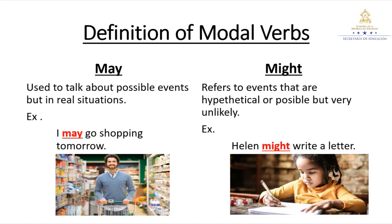Continuing with the definition of modal verbs, I have 'may.' May is used to talk about possible events in real situations. For example: I may go shopping tomorrow — which means it is likely to happen. On the other hand, 'might' refers to events that are hypothetical or possible but very unlikely. For example: Helen might write a letter — meaning it is not certain. So might is for a hypothetical event, but may is for a real situation or real event.